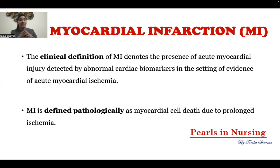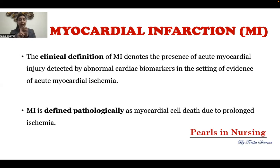These definitions are as per the recent AHA guidelines — the American Heart Association. Clinically, to define myocardial infarction, there should be presence of acute myocardial injury, which can be detected by elevated or abnormal cardiac biomarkers such as trop T and trop I. Plus, this should occur in the setting of evidence of acute myocardial ischemia.